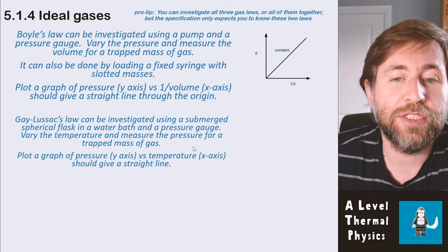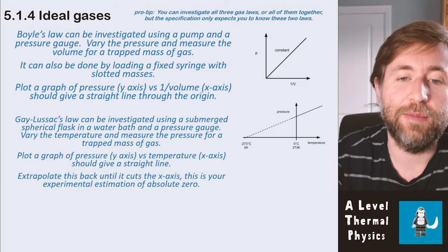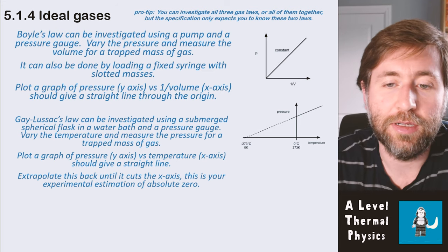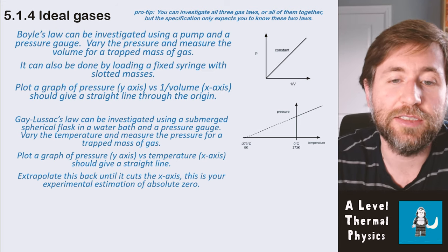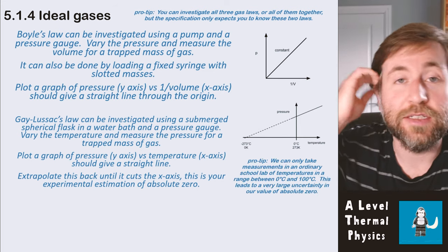and we measure the pressure for that trapped mass of gas. And then again, we can plot pressure versus temperature, and that should give us a straight line. We extrapolate that back, that's what is going on with the dotted line there, until it cuts the x-axis. And that is our experimental estimation of what absolute zero is going to be.